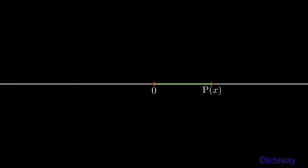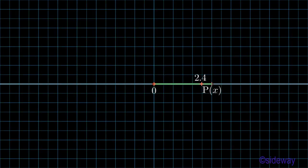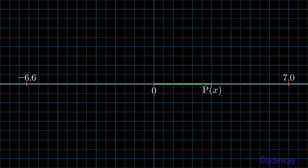For example, coordinates on the default side, that is to the right of the origin, are positive, while coordinates on the other side, that is to the left of the origin, are negative. Therefore, each point on the line corresponds to a real number, with respect to the position of the point relative to the origin along the line.